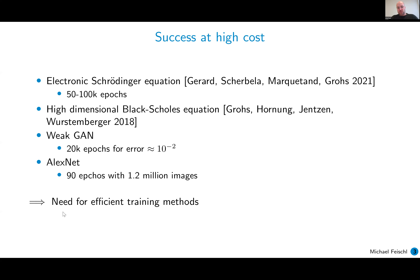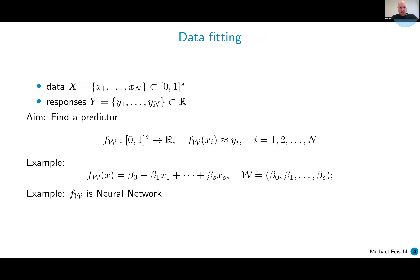There is a need for more efficient training methods, and this is exactly what we're trying to do here. The hope is that quasi-Monte Carlo methods can repeat their success from PDEs in neural networks. Any training of a neural network is essentially data fitting: you have data x and responses y, and you want to find the predictor f which maps the data space to the response space. The simplest example would be linear regression.